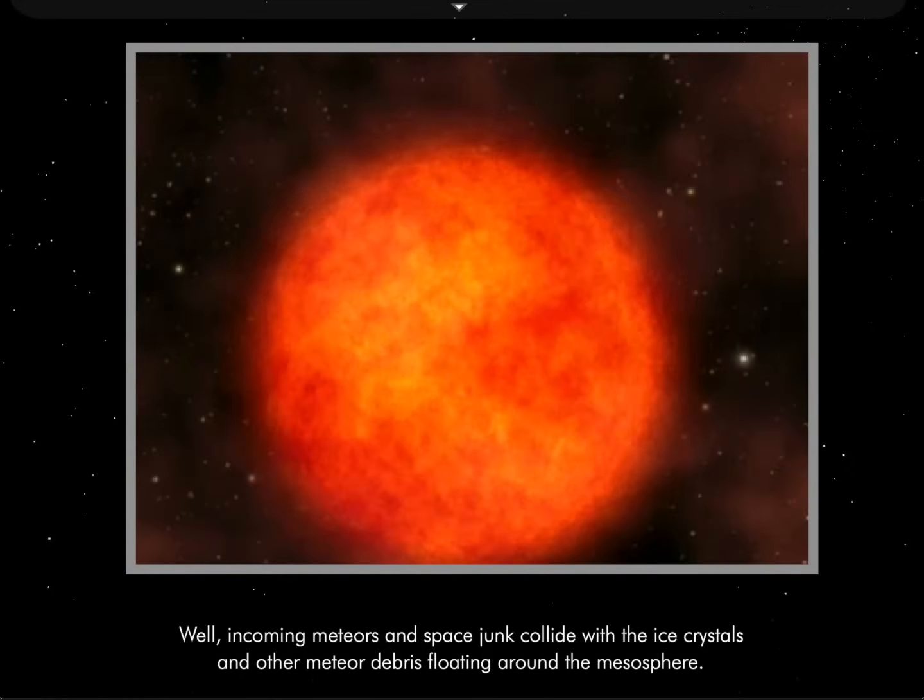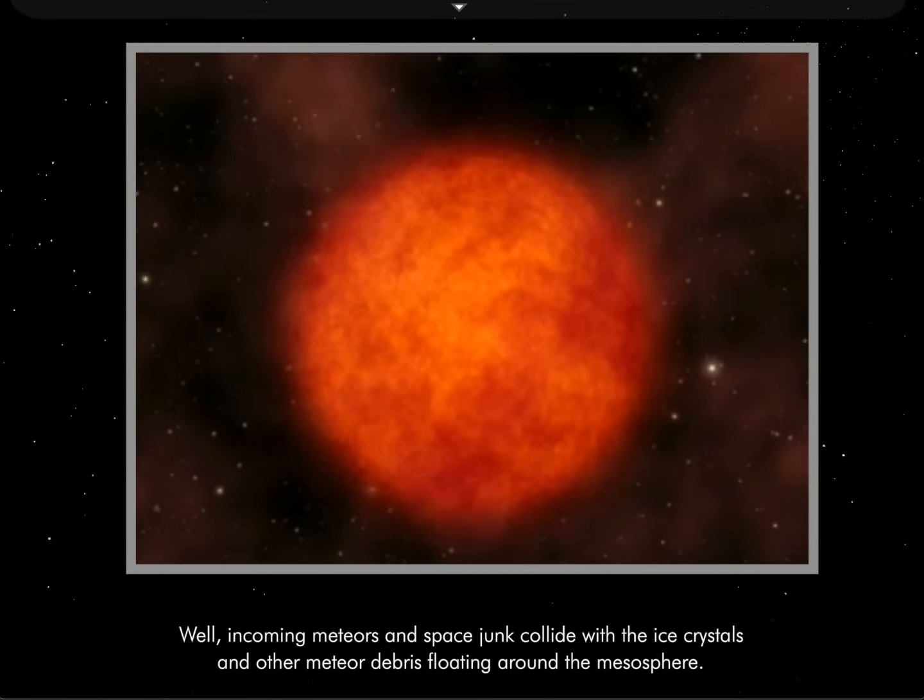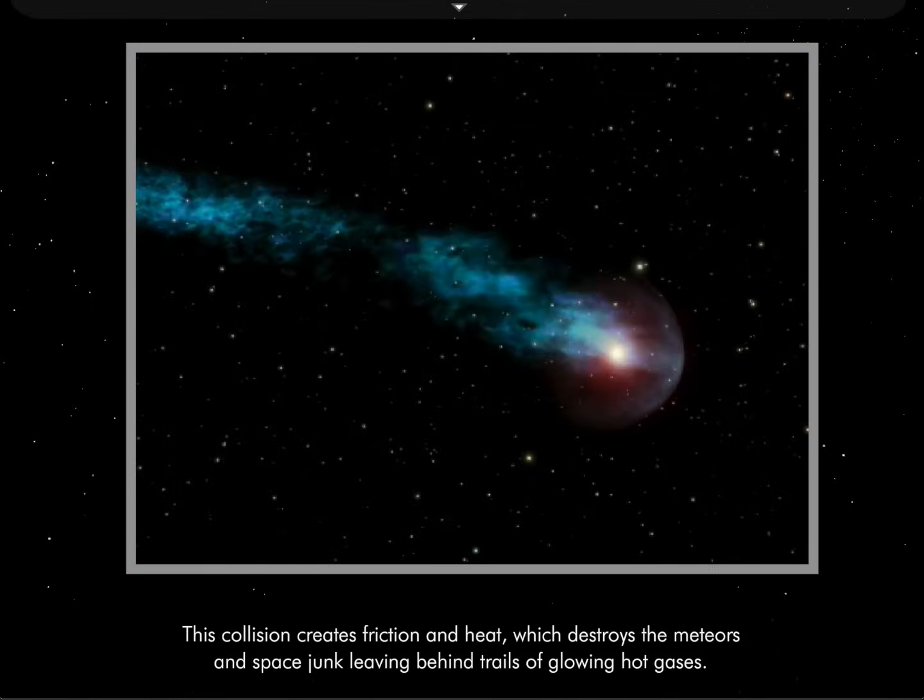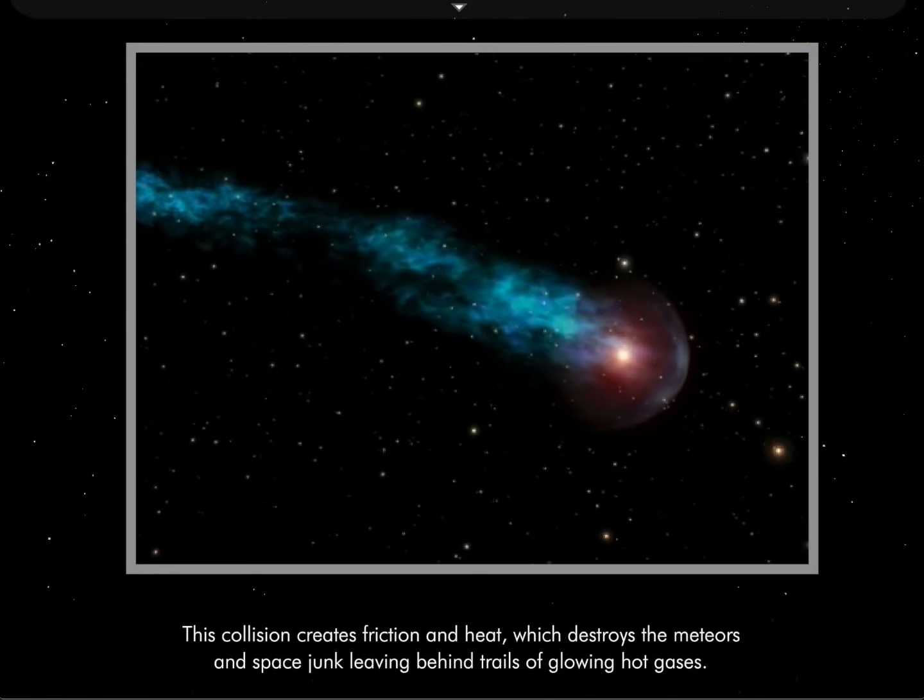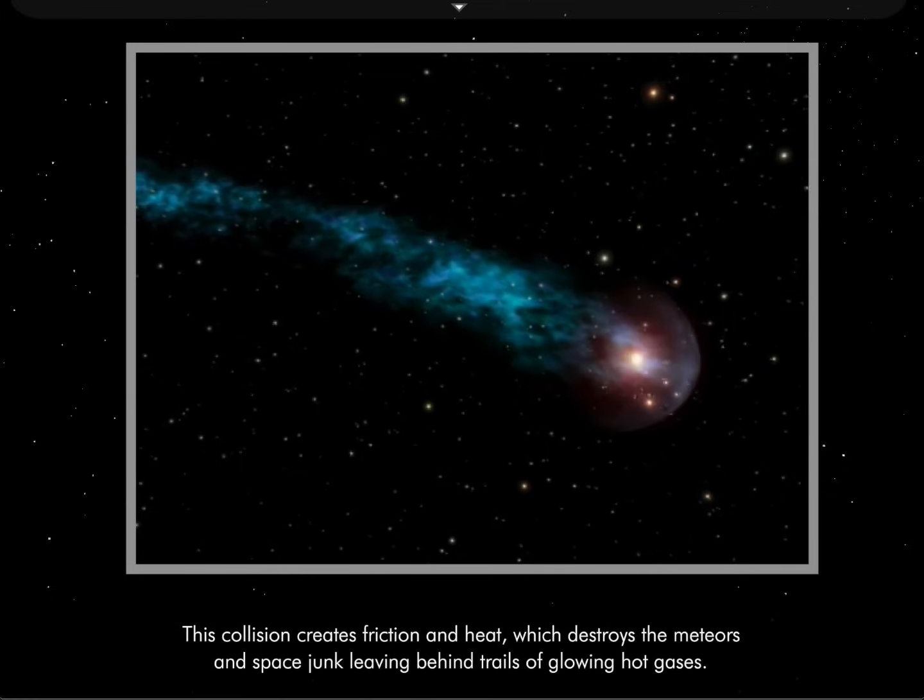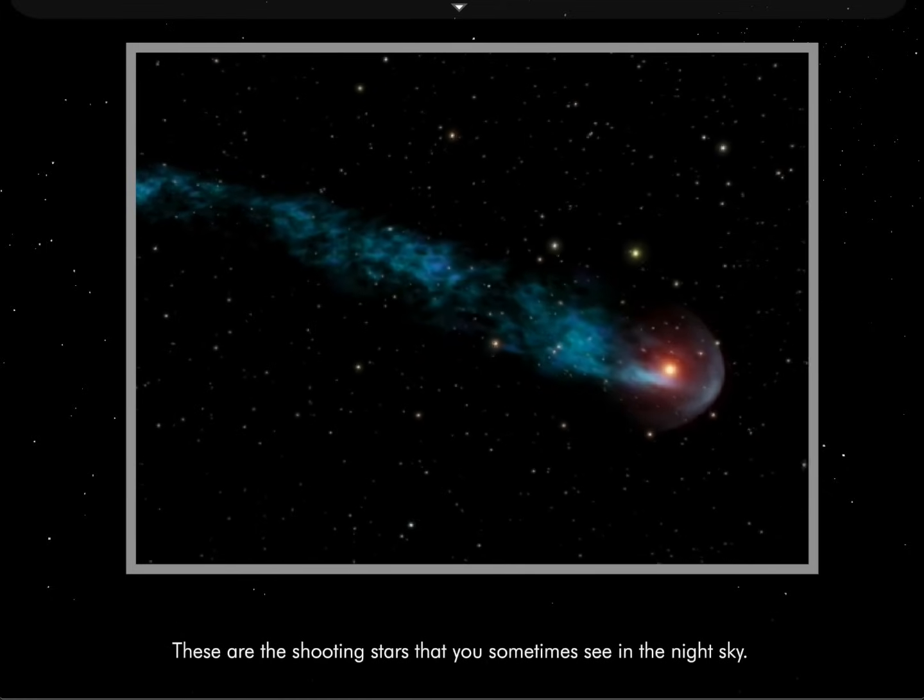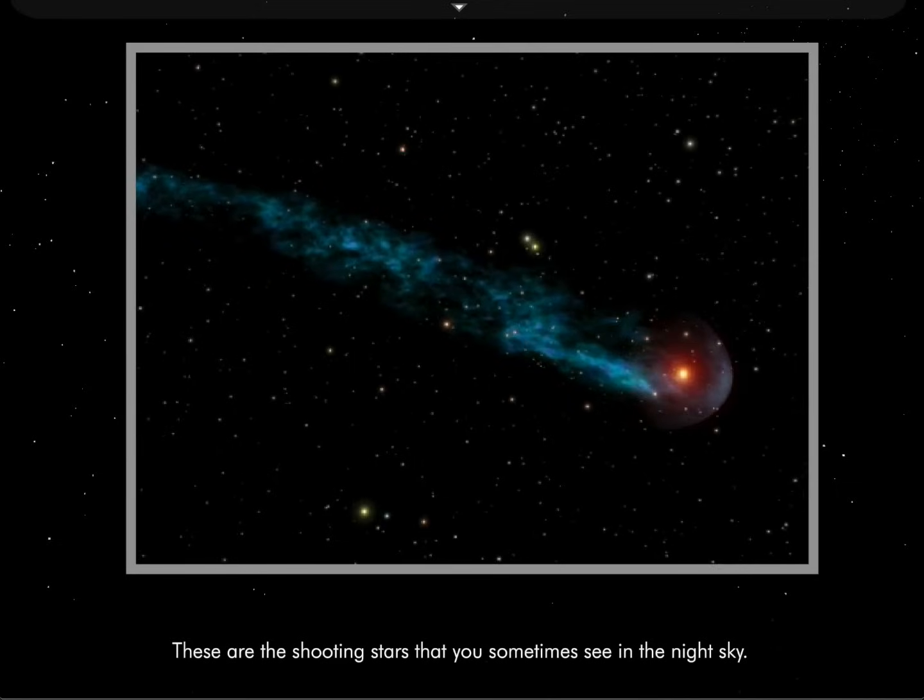Incoming meteors and space junk collide with the ice crystals and other meteor debris floating around the mesosphere. This collision creates friction and heat, and that destroys the meteors and space junk, leaving behind trails of glowing hot gases. These are the shooting stars that you sometimes see in the night sky.